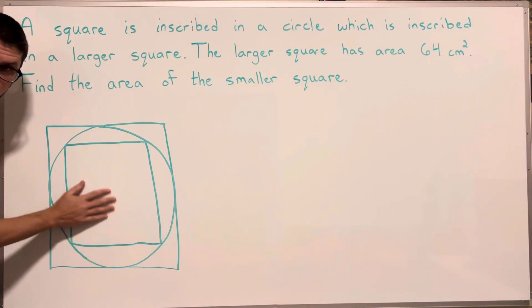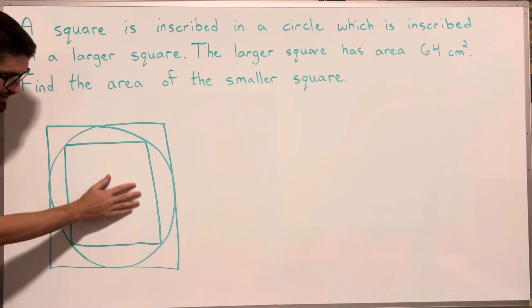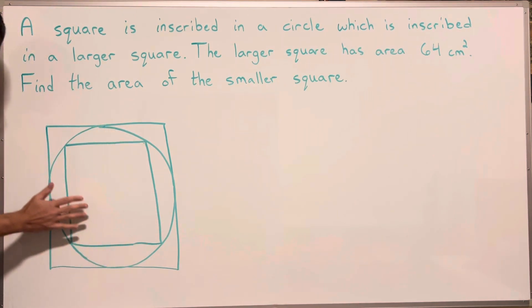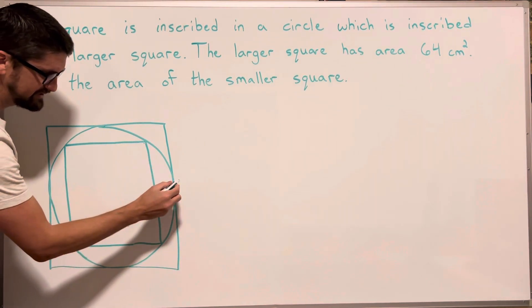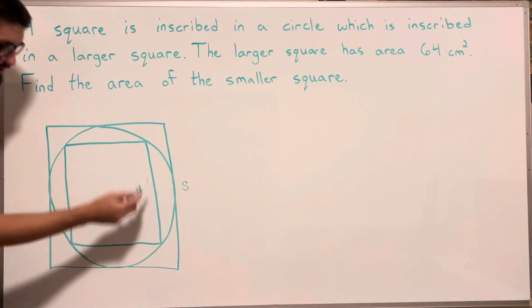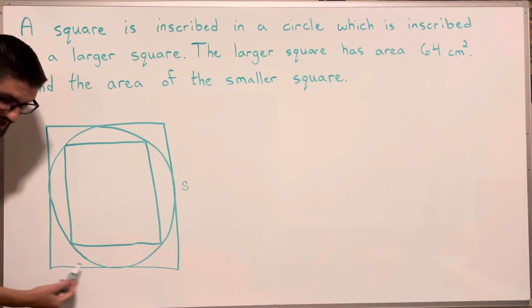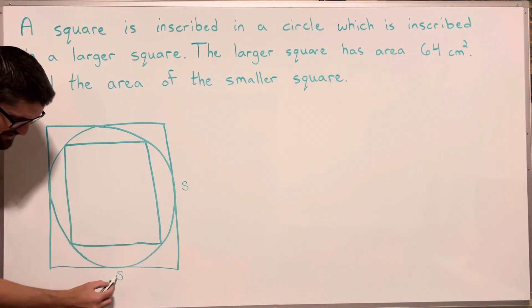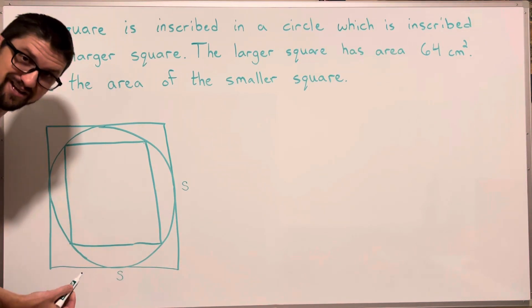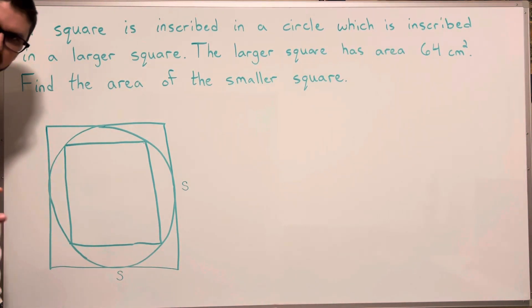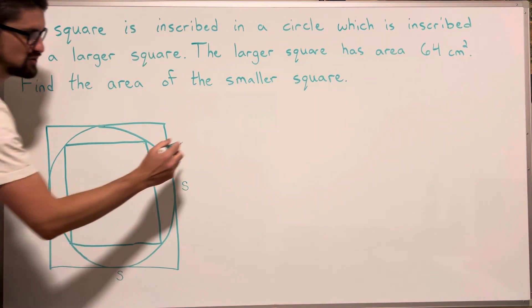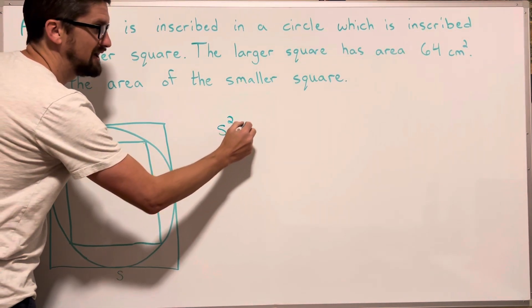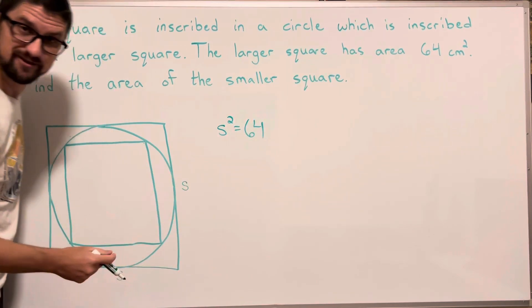We're trying to find the area of this smaller square. We have the area of the larger square, that's 64. Let's call this side, this distance, s. It's a square so all the sides are the same, so this distance down here is also s, and the area of a square is just s times s, s squared. So s squared has to be 64.